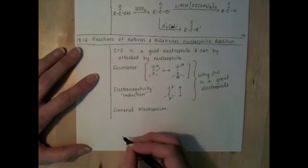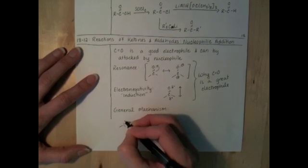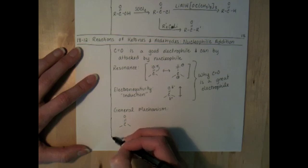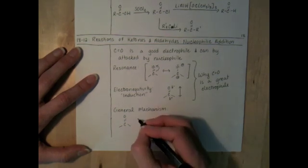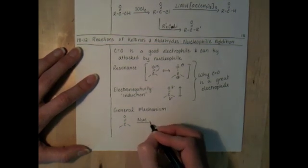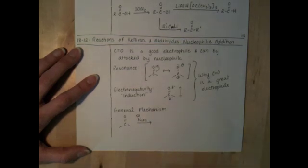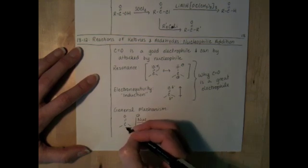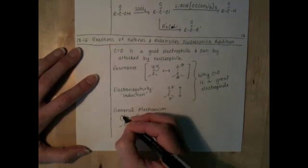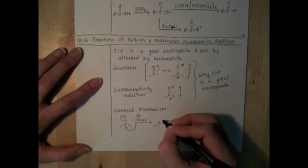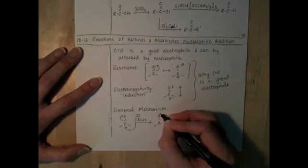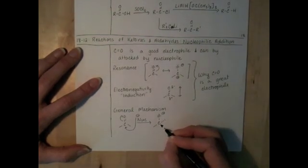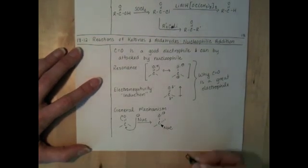The general mechanism for the reaction looks like this. You've got the carbonyl group, and this is going to be for ketones and aldehydes, and we'll see it for other types of carbonyl compounds as well. We're going to bring in some sort of nucleophile that's going to have lone pairs on it or a true negative charge, and it's going to go after that carbonyl carbon, open up the carbon-oxygen double bond, and we create something that looks like this.